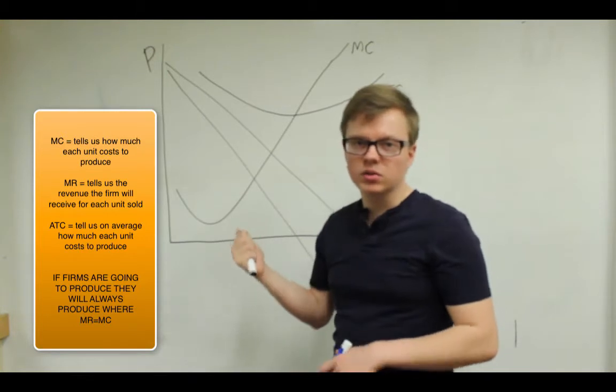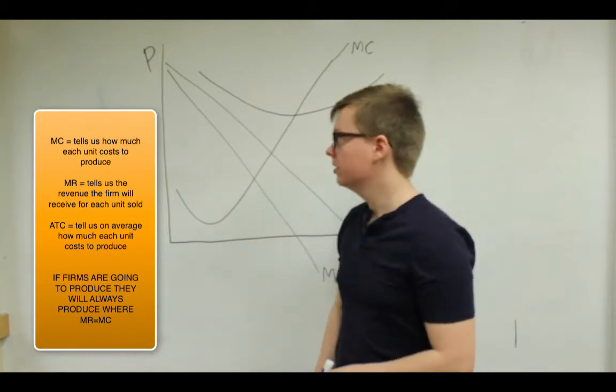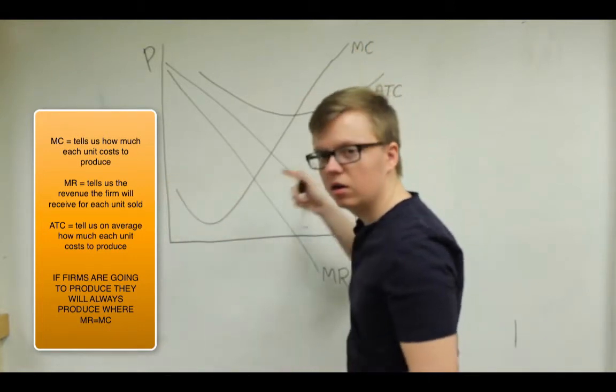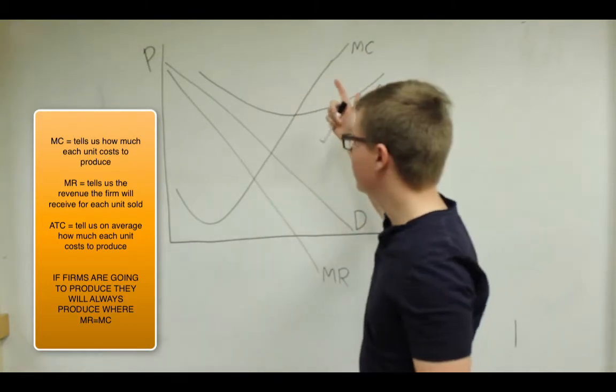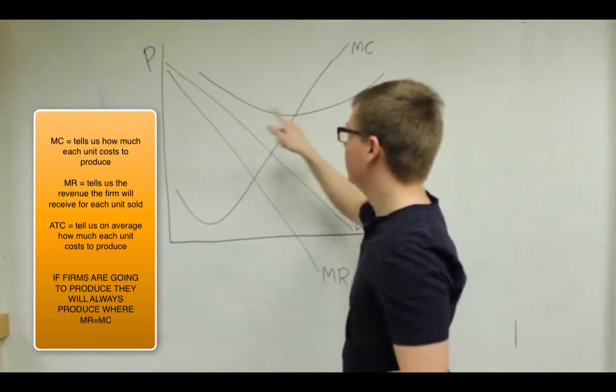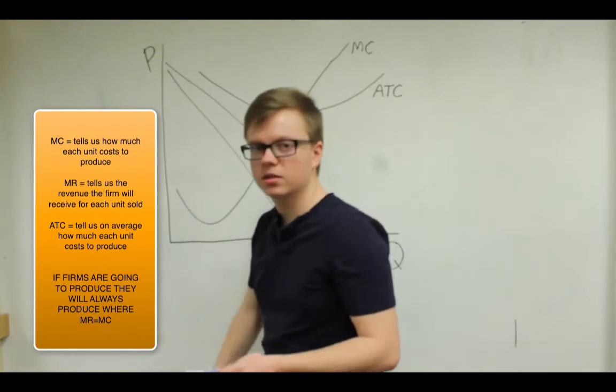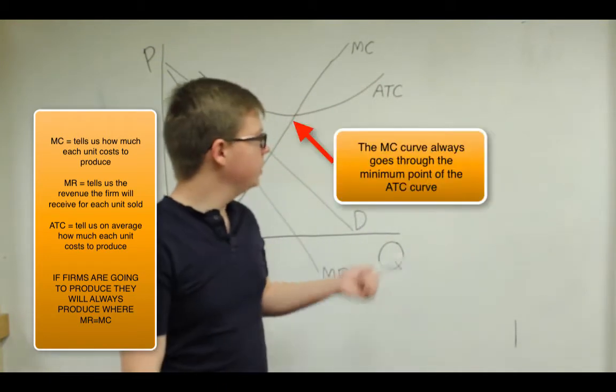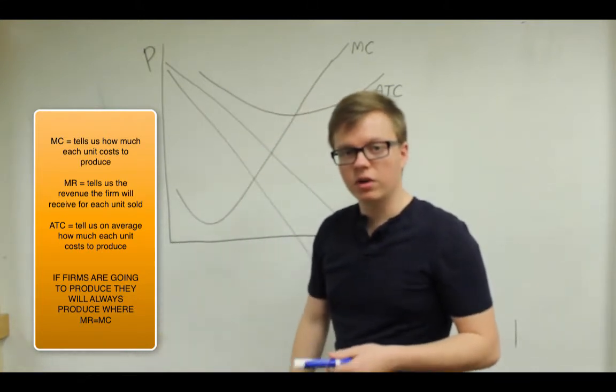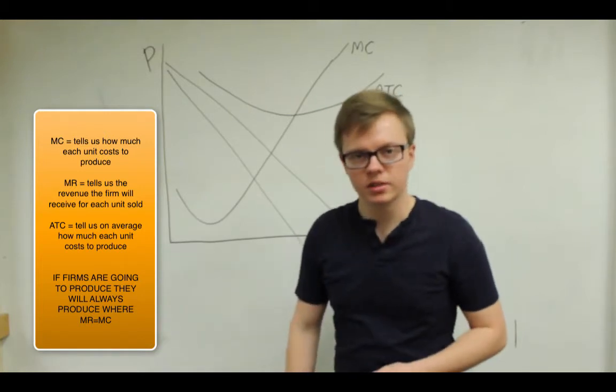So this is either most likely a monopoly or maybe a firm in monopolistic competition. And then we also have our marginal cost curve. So this is what it typically looks like. And we have our average total cost curve that the marginal cost goes through the bottom of the average total cost. So we just want to look at this graph today and ask ourselves, what can we figure out about this firm and what it will produce and what its profit will be.